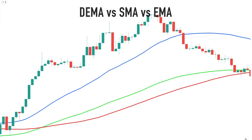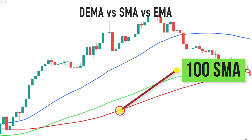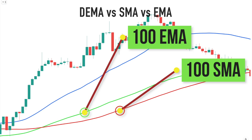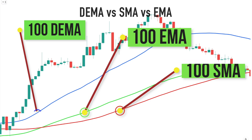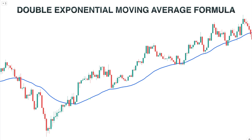Let's take a look at this chart and compare the differences between different types of moving averages. Here we have a price chart with the following overlays: the red line represents the 100-period simple moving average, the green line represents the 100-period exponential moving average, and the blue line represents the DEMA moving average line. Notice how the Double Exponential Moving Average hugs the price action better than both the simple moving average and exponential moving average. The DEMA has a complicated formula behind it.